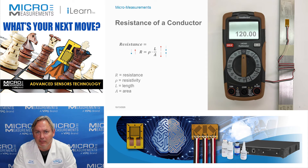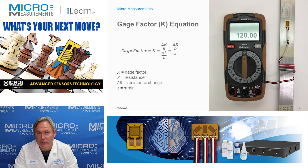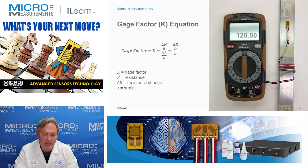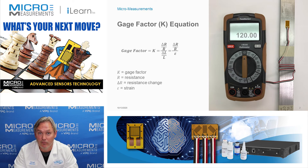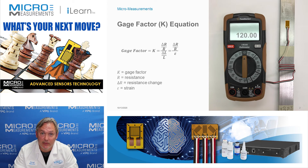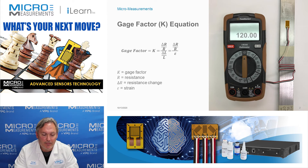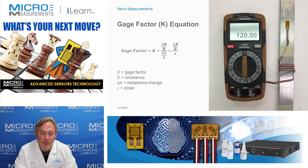The gauge factor equation is given as K is equal to the relative resistance change, or delta R over R, divided by delta L over L, which is our strain. The gauge factor is essentially a sensitivity measurement of the strain gauge that allows us to correlate the strain and this factor to the amount of resistance change that you get from the gauge.